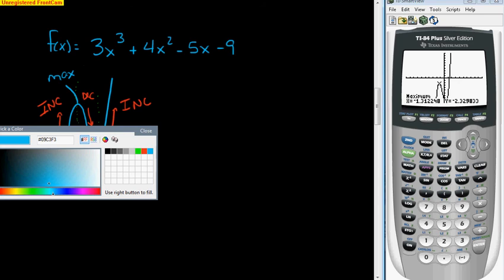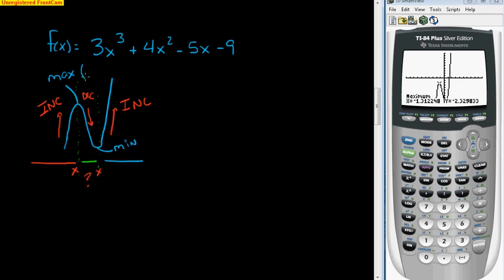And you can see the coordinates come up right here. So this maximum right here has a coordinate of negative 1.312, comma, negative 2.329. Now, again, remember, we only care about the x value. So this is what we care about right here.